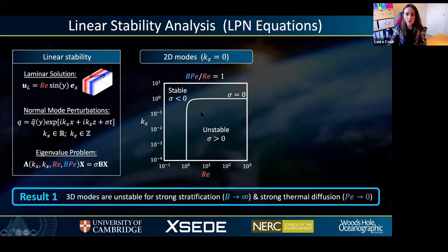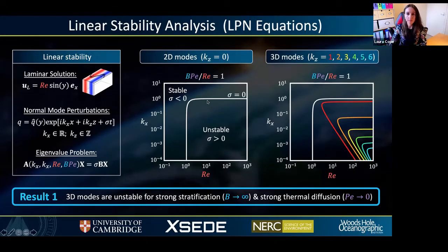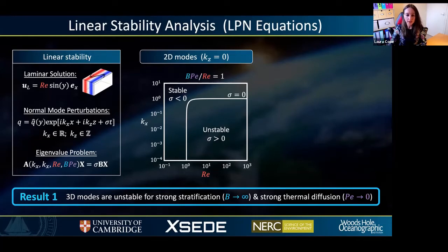We're going to focus to begin with on the 2D modes, which are vertically invariant where kz equals zero. Then we can consider how the stability of these modes varies with Reynolds number and streamwise wave number kx. The neutral stability curve for these 2D modes, where sigma equals zero, is shown in the center of the slide, and instability is found below and to the right of this curve. This shows that all Reynolds numbers that are greater than or equal to order one are unstable to this 2D mode. This is in fact true for all combinations of parameters, not just the single example shown here.